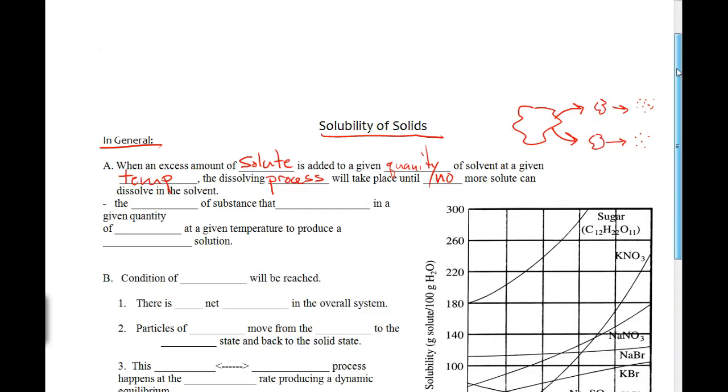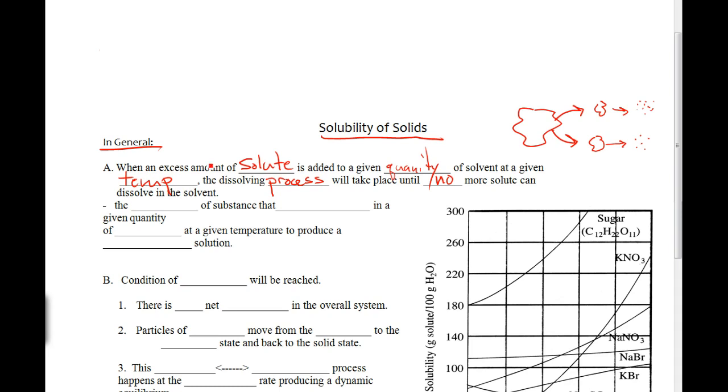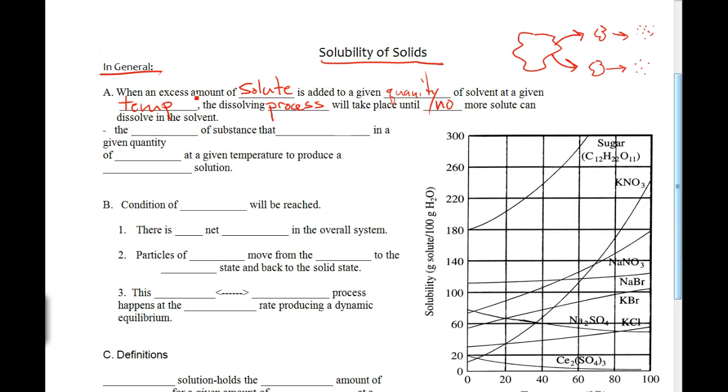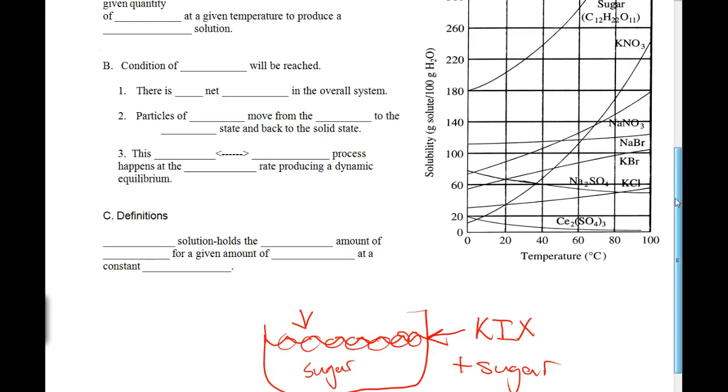So this first thing that we just barely said, let's put this in English. It says, when an excess amount of solute is added to a given quantity of solvent at a given temperature, the dissolving process will take place until no more solute can dissolve in the solvent. Now, most of us, since we're human,